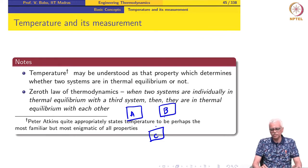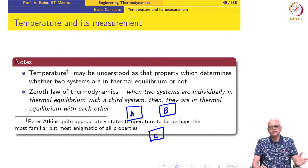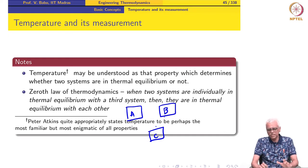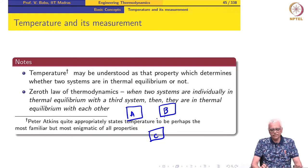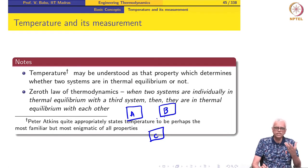Notice that this definition talks about thermal equilibrium but does not assign a number. We are used to seeing a number for temperature — when someone asks what the temperature is outside, we would say 25 degrees Celsius. This definition does not give a number. How we come up with that number comes under the category of measurement of temperature. The definition of temperature itself is not quantitative — it only talks about thermal equilibrium and temperature-dependent properties.